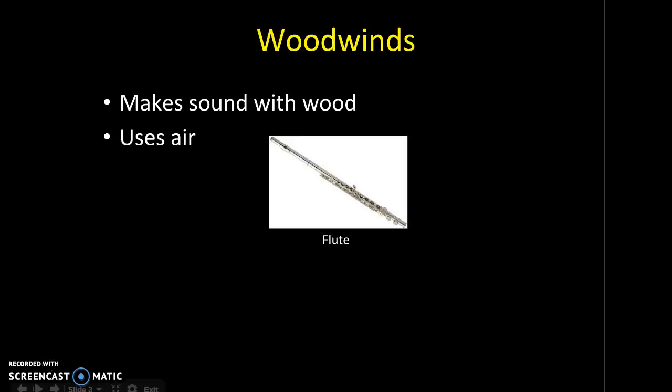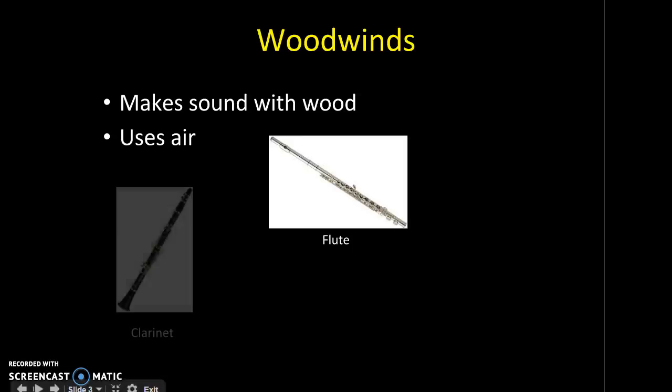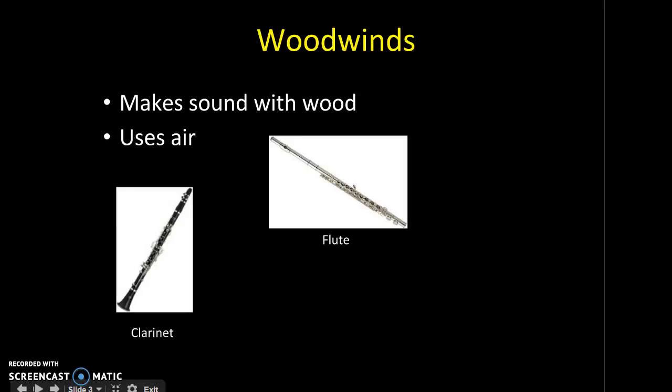The next instrument is the clarinet. The clarinet uses a reed. The reed is a piece of wood that vibrates and makes the vibrations go down the clarinet to help the sound.